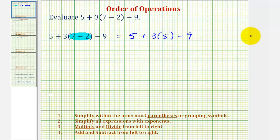The next step in the order of operations is to simplify any exponents. We don't have any exponents, so we go to the next step. Step three, we multiply and divide from left to right.